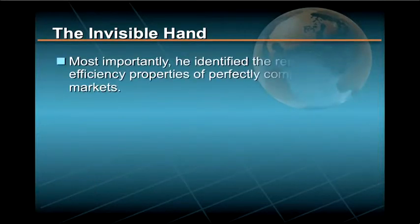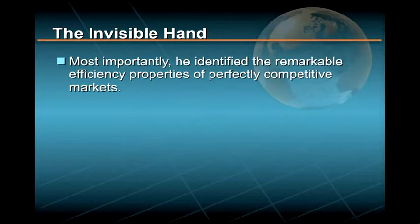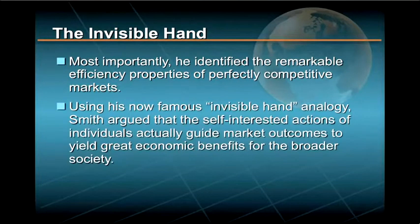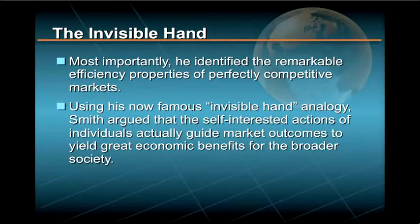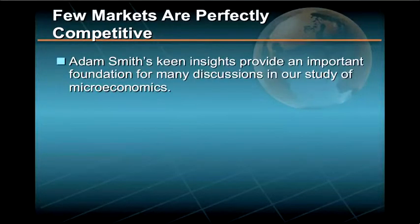Most importantly, he identified the remarkable efficiency properties of perfectly competitive markets. Using his now-famous invisible hand analogy, Smith argued that the self-interested actions of individuals actually guide market outcomes to yield great economic benefits for the broader society.